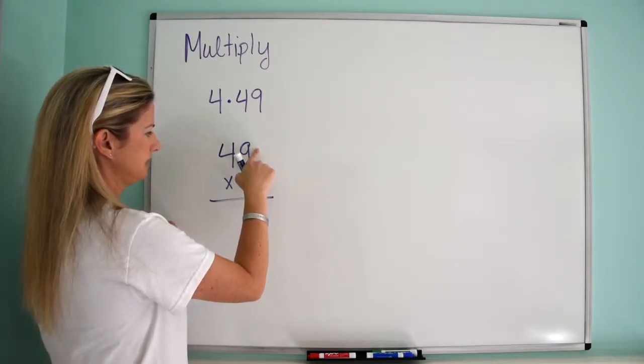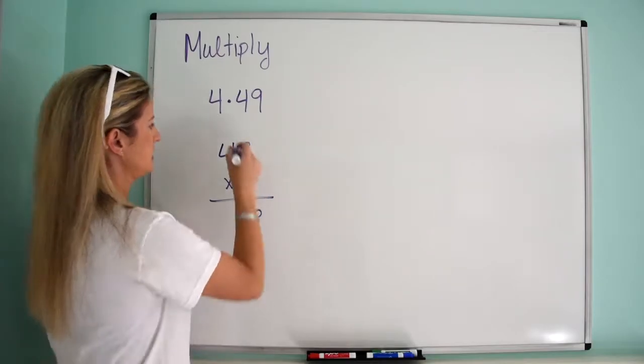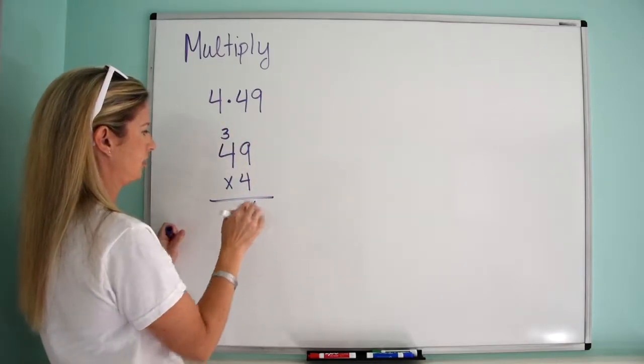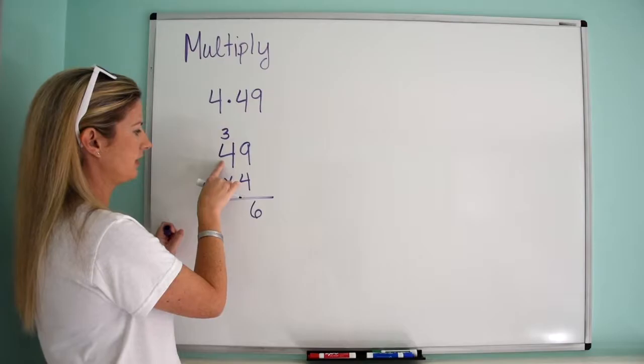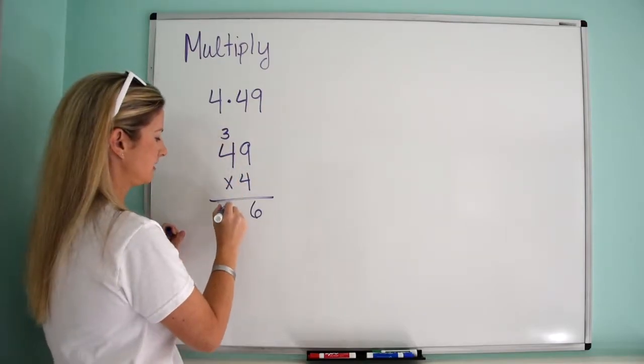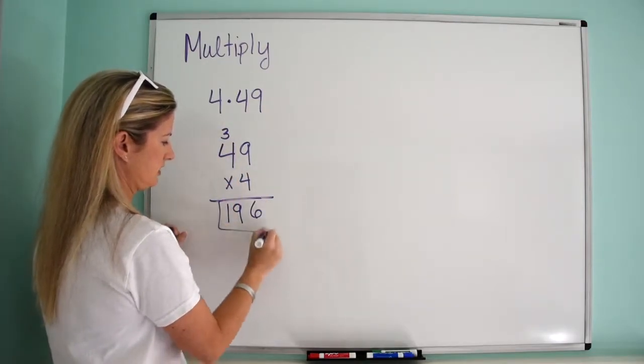Okay, so 4 times 9 is 36. Put the 6 down, carry the 3. 4 times 4 is 16. 16 plus 3 is 19. So the answer is 196.